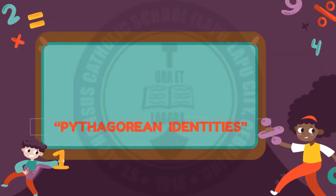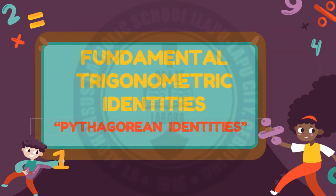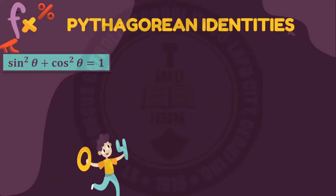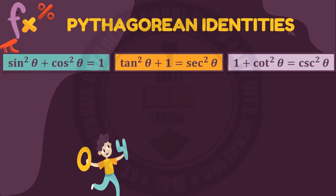And lastly, the Pythagorean identities. We have three Pythagorean identities. First is sine squared theta plus cosine squared theta equals one. Next, tangent squared theta plus one equals secant squared theta. And lastly, one plus cotangent squared theta equals cosecant squared theta.